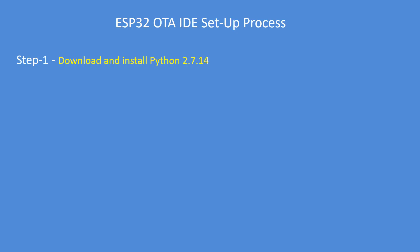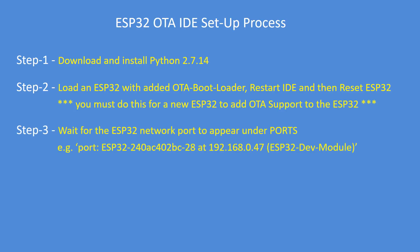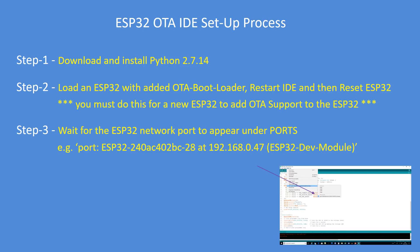To set up your IDE for over-the-air updates, download and install Python 2.7.14 — it has to be that version. There are detailed install instructions on the ESP webpages. Load up an ESP32 with the added OTA bootloader and a sketch, then restart your IDE and restart the ESP32. You must do that for any new device. Wait for the network port to become visible under your ports section — here I'm showing how the ESP32 has started and the port number is now visible.